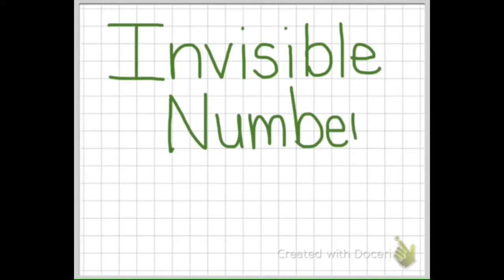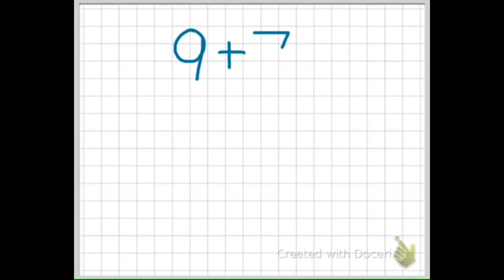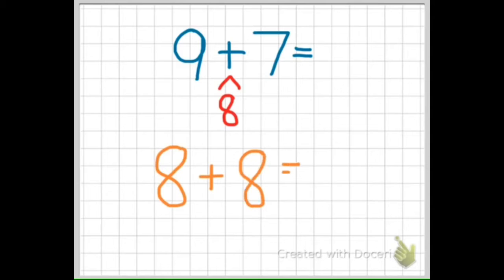The next addition strategy is called invisible number. Once again, the double strategy helps us solve problems with the pattern using the invisible number strategy. The numbers 9 and 7 are not right next to each other on the number line. There is a number in between 9 and 7 that we call the invisible number, and that is the number 8.